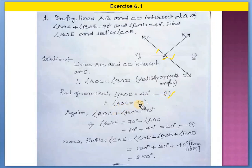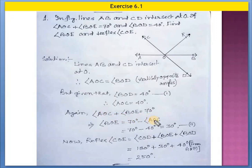Therefore angle AOC is also 40 degrees because angle AOC equals angle BOD. Now, angle AOC plus angle BOE equals 70 degrees — this is given. So angle BOE equals 70 minus angle AOC equals 70 minus 40 equals 30 degrees. This is equation number 2.